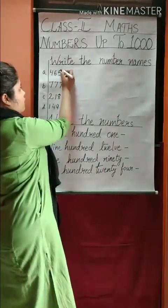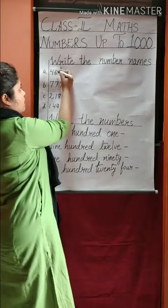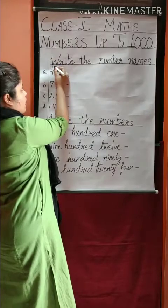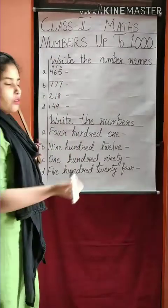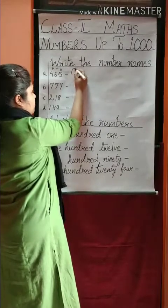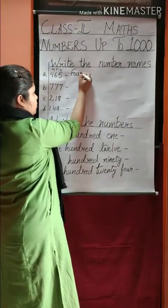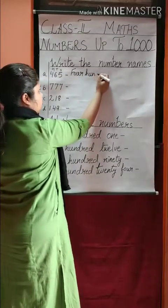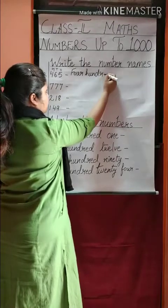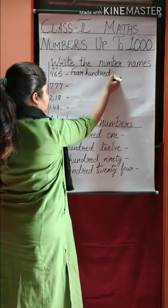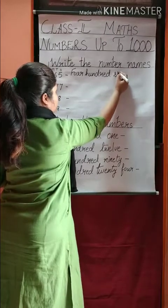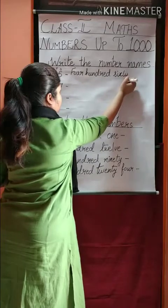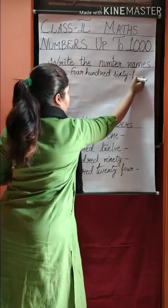As you can see here, 5 is in the 1's place, 6 is in the 10's place, and 4 is in the 100's place. So we will write four hundred sixty-five.